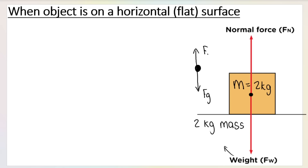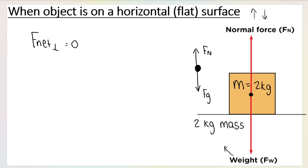Say we have an object with a mass of 2 kilograms on a flat surface. The first thing to work out is the weight. The free body diagram has weight going straight down — W or FG — and the normal force going straight up, FN. We assume the box is not moving upwards or downwards, so it's stationary in the vertical or Y direction, meaning net force in the Y direction, or perpendicular direction, is zero.